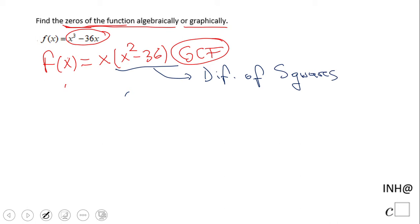squares, the famous one that's very useful. In this case, x times x minus 6 times x plus 6. So this is the factored form of this polynomial f(x). Now we're going to